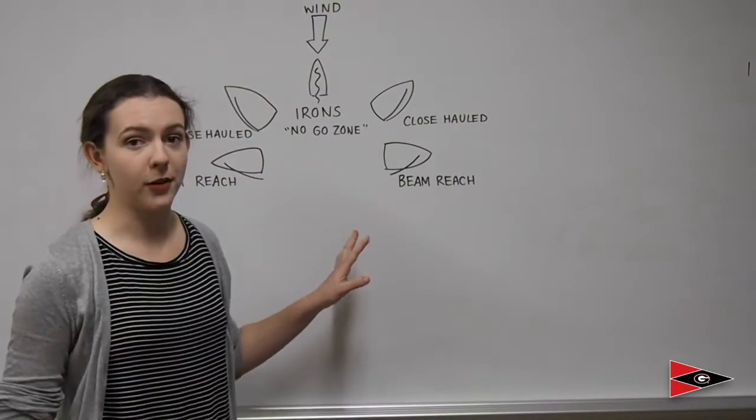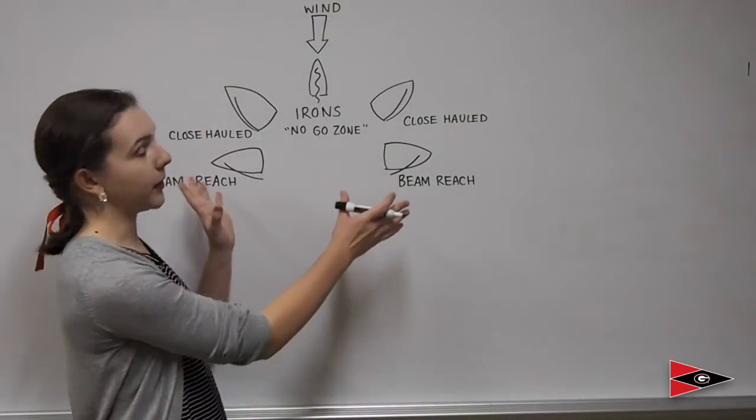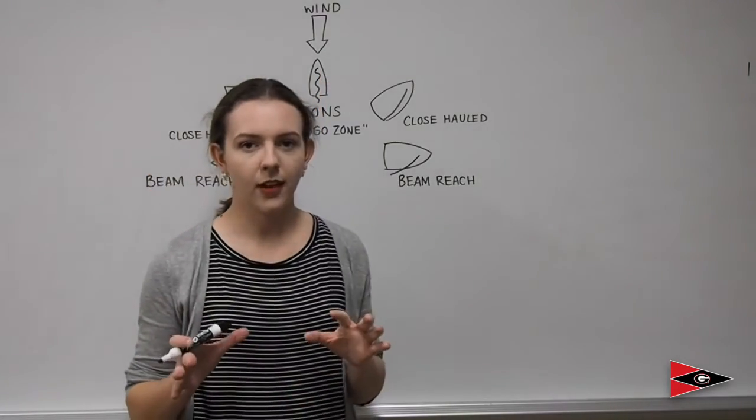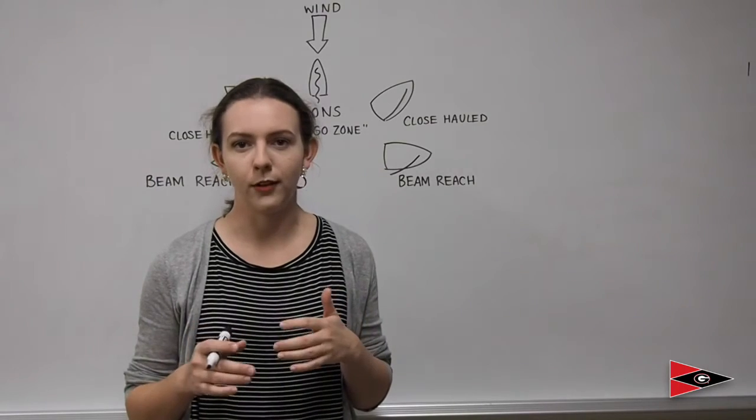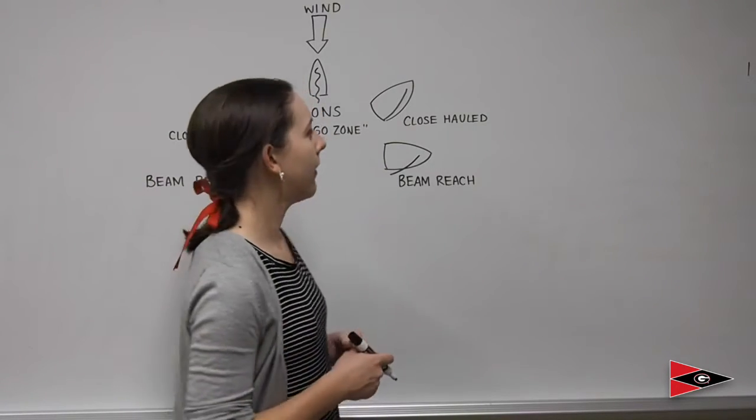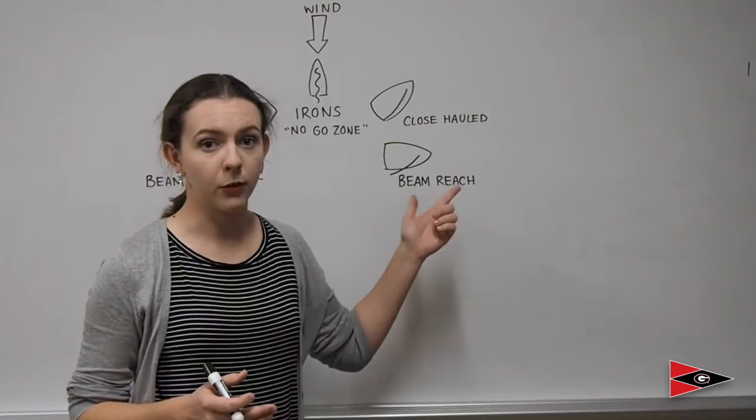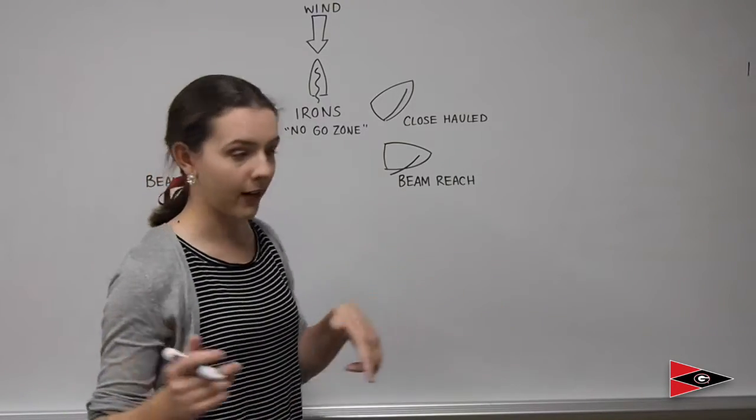Your next point of sail is going to be the beam reach. It's about perpendicular to your irons position. This one will not be used as much. You'll not be told often to go on a beam reach somewhere. It's just kind of used as a passing position between close-hauled and the next point of sail.